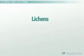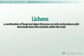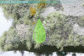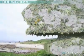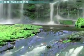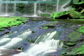Another type of chemical weathering involves lichens. Lichens are a combination of fungi and algae, and grow on rocks and produce acids that break down the minerals within the rocks. When water mixes with the lichens, they produce a weak acid. This is a very slow process because lichens are slow growing and the acid they produce is very weak. However, this is a common type of chemical weathering near rivers and streams.